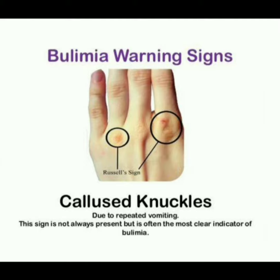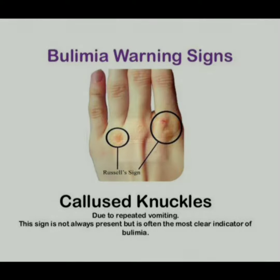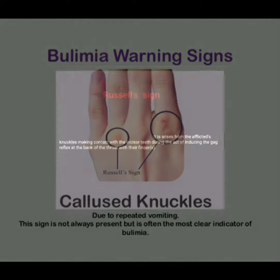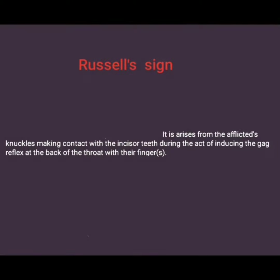This image is showing Russell's Sign — calloused knuckles due to repeated vomiting. This sign is not always present, but it is often the most clear indicator of bulimia. It is a bulimia warning sign.